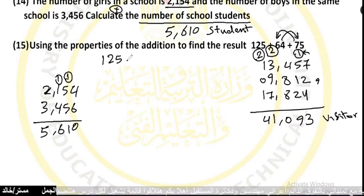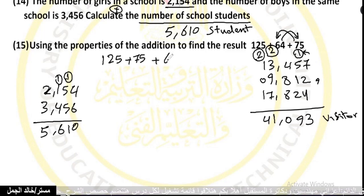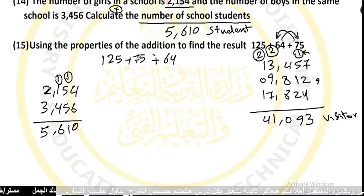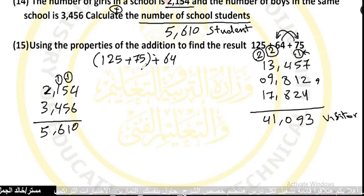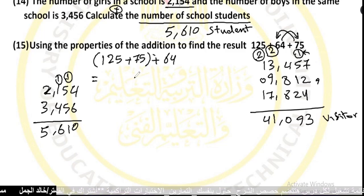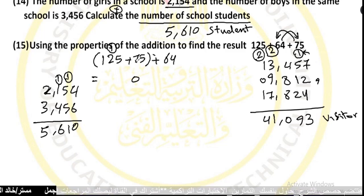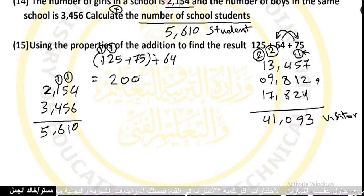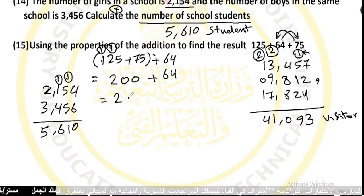Now I associate 125 with 75 to get a round number. 5 plus 5 equals 10, write 0 carry 1. 2 plus 7 equals 9, plus 1 equals 10, carry 1. 1 plus 1 plus 1 equals 2. So 125 plus 75 equals 200. Then 200 plus 64 equals 264. The result is 264.